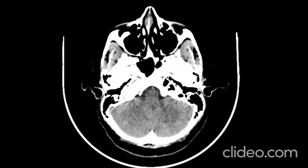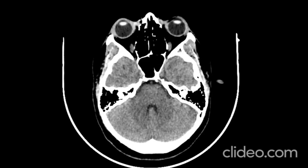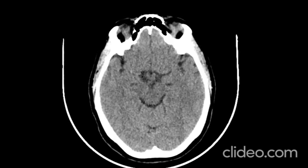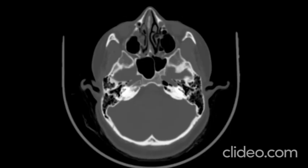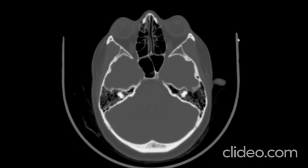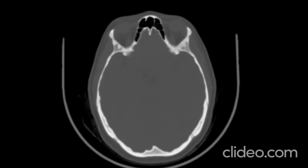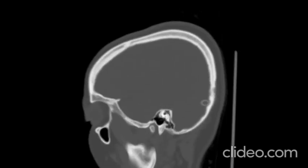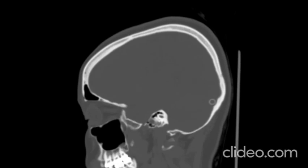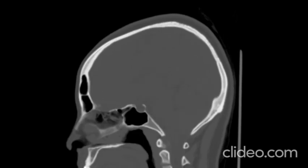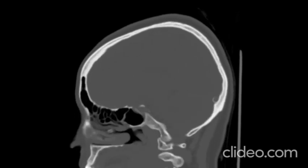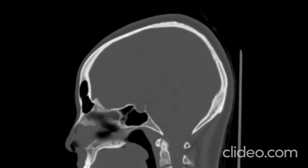Non-contrast axial CT scan shows a fully expanded, well-positioned stent in the right transverse sinus with no parenchymal abnormalities. Axial and sagittal CT scans with bone windows confirm good positioning of the stent within the right transverse sinus and no other abnormalities.